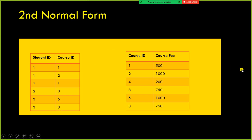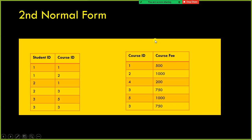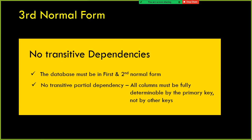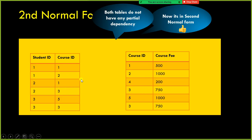Since the course fee is depending on the course ID only, we remove it from the student table. We break this column into a separate table. In the separate table, we have course ID and course fee — the course fee is fully dependent on course ID. In the student table, we retain student ID and course ID. Now both tables do not have any partial dependency — this column is fully dependent on this one, and that column is fully dependent on that one. Hence it is in second normal form now. You can link these two tables based on the course ID in order to query the data from both tables.